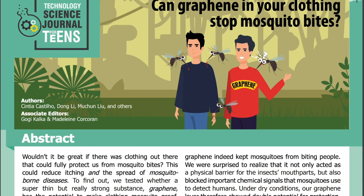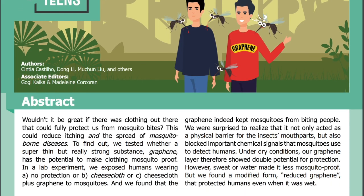Let's start with the abstract. Wouldn't it be great if there was clothing out there that could fully protect us from mosquito bites? This could reduce itching and the spread of mosquito-borne diseases. To find out, we tested whether a super thin but really strong substance — graphene — has the potential to make clothing mosquito-proof. In a lab experiment, we exposed humans wearing A, no protection, or B, cheesecloth, or C, cheesecloth plus graphene, to mosquitoes. And we found that the graphene indeed kept mosquitoes from biting people. We were surprised to realize that it not only acted as a physical barrier for the insect's mouthparts, but also blocked important chemical signals that mosquitoes used to detect humans. Under dry conditions, our graphene layer showed double potential for protection.